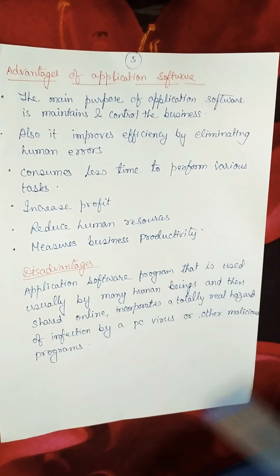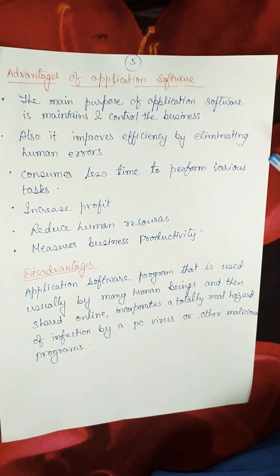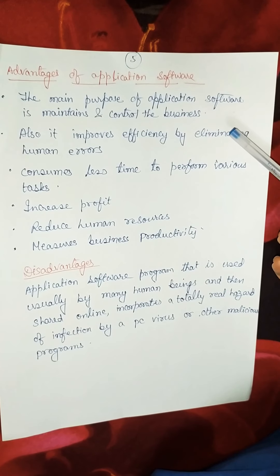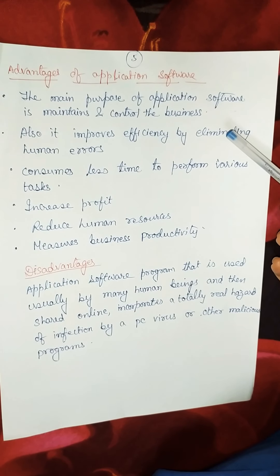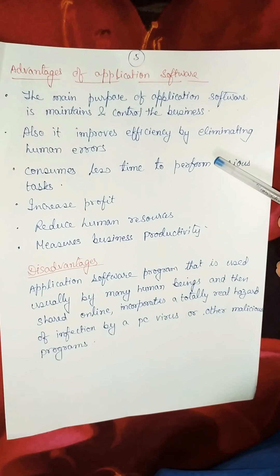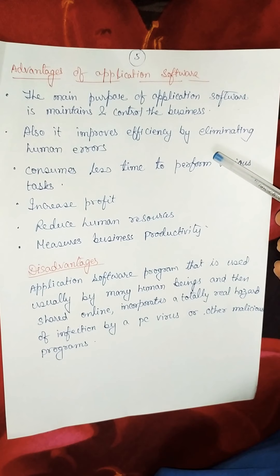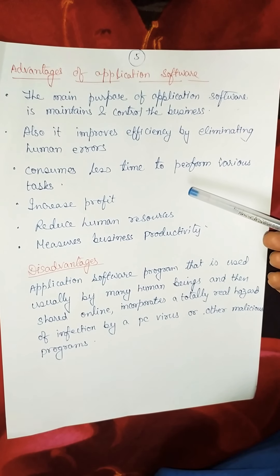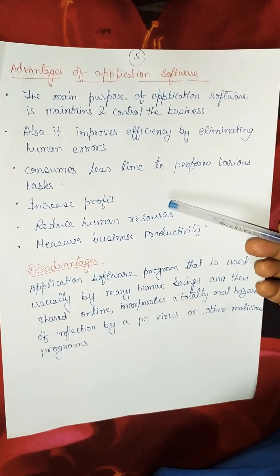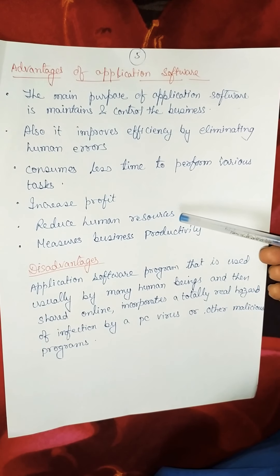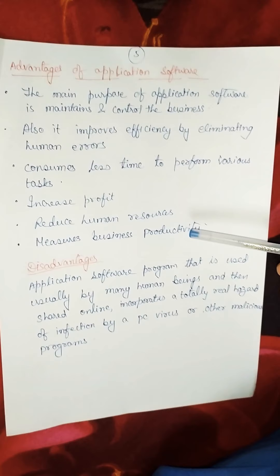Some advantages of application software are: 1. The main purpose is to maintain and control the business. 2. It improves efficiency by eliminating human error. 3. It consumes less time to perform various tasks. 4. It increases profit. 5. It reduces human resources. 6. It measures business productivity.